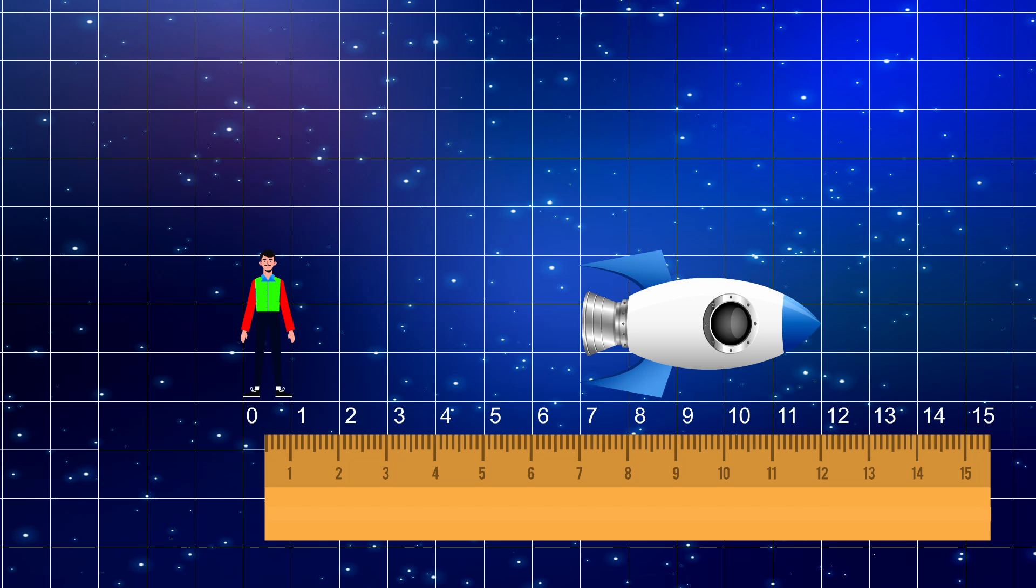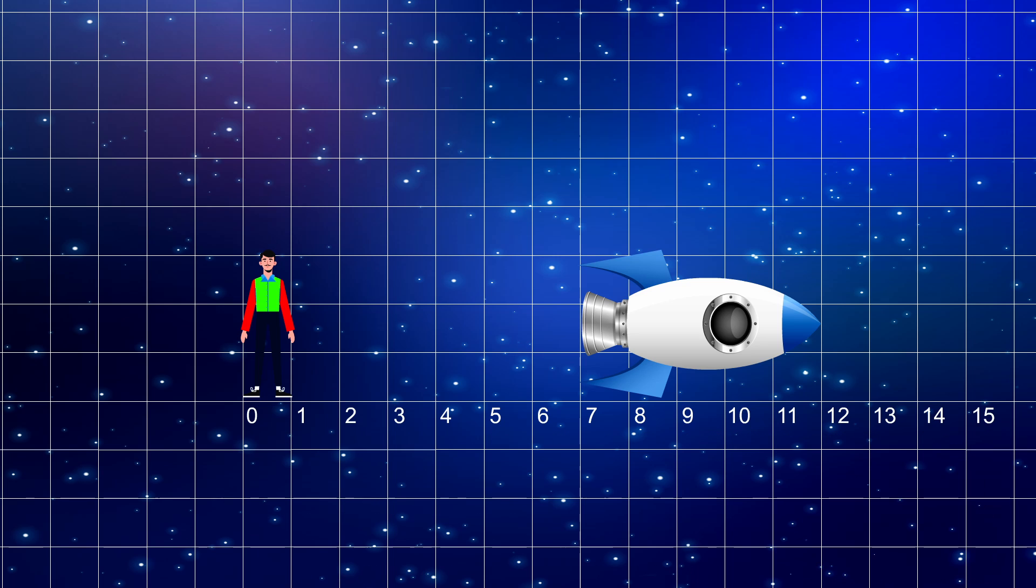If you have a ruler, you can establish your coordinate system, so you know the distance from you to every point in the universe. Now you take the distance of one end of the object and subtract the distance of the other end, and the absolute value of this difference is the length of the object, right?